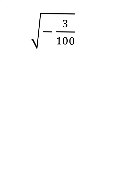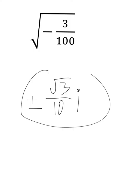One more example: I have negative 3 over 100. The square root of 100 is plus or minus 10, and it was a negative number, so I'm going to have i with it. That 3 doesn't simplify, but it can stay on top. So the final answer is plus or minus the square root of 3, over 10, times i.